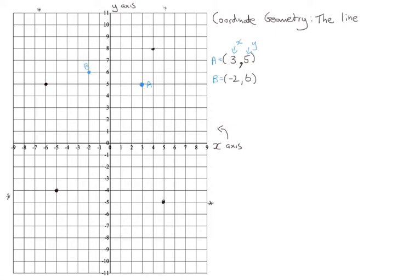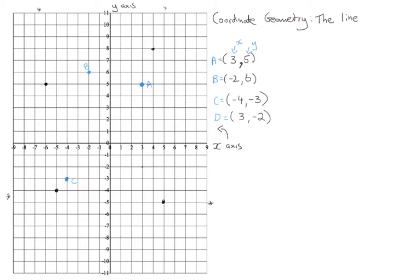The next point is C at (-4, -3). We go out to minus 4 on the x-axis, and then we go down to minus 3. Let's call this point C. Then D is (3, -2): we go out to 3 along the x-axis and then down to minus 2, level with minus 2. This is coordinate D.